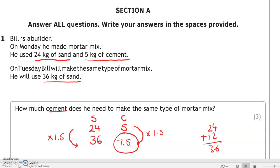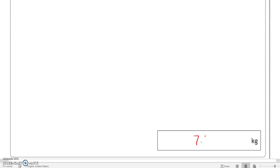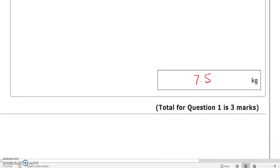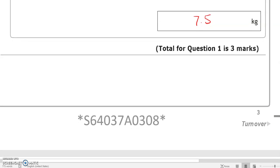So that's the answer. You could have done this in other ways as well. You could have divided 36 by 24, got the number, and then multiplied that by 5. There are many different methods. This is, I think, the easiest given that you can't use a calculator. But don't forget to write here 7.5 kilograms because the unit is given to you. So you get 3 marks for that.